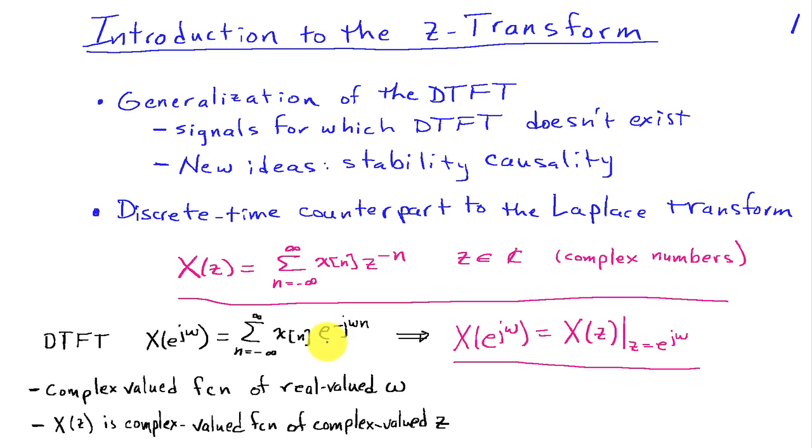So the difference here is that in the Z-Transform, we're using Z in place of E to the J omega, which is used in the discrete-time Fourier transform. In fact, that tells us that the discrete-time Fourier transform can be obtained from the Z-Transform by evaluating the Z-Transform at Z equals E to the J omega.